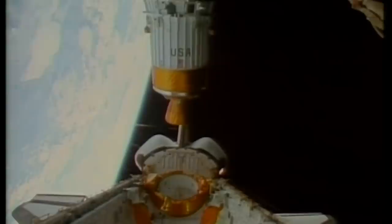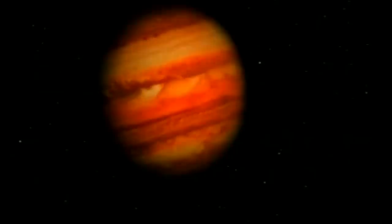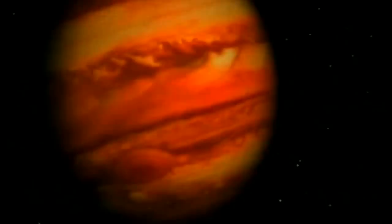Dix ans plus tard, depuis l'orbite de la Terre, la navette spatiale lance Galiléo. En passant par Vénus et deux fois au large de la Terre, il faut six longues années à la sonde pour atteindre Jupiter.